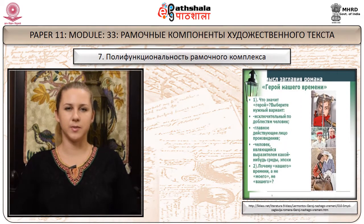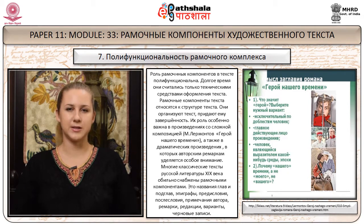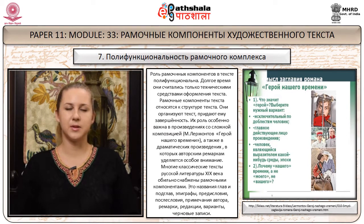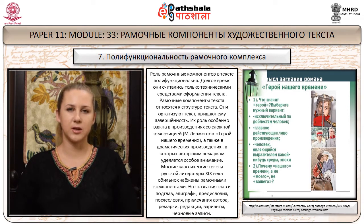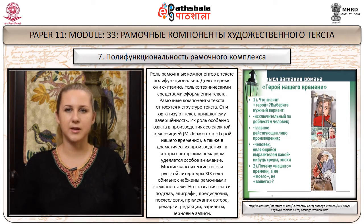Полифункциональность рамочного комплекса. Роль рамочных компонентов в тексте полифункциональна. Долгое время они считались только техническими средствами оформления текста. Рамочные компоненты относятся к структуре текста: они организуют текст, придают ему завершённость. Их роль особенно важна в произведениях со сложной композицией, например в «Герое нашего времени» Лермонтова, а также в драматических произведениях, в которых авторским ремаркам уделяется особое внимание. Многие классические тексты русской литературы XIX века обильно снабжены рамочными компонентами.